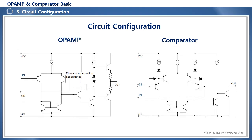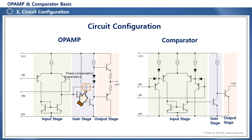Looking at the actual internal circuit of the op-amp and comparator, the input stage consists of a differential amplifier stage which amplifies the voltage difference between the plus and minus input terminals. The gain stage further increases the open loop gain. We can see that the op-amp has a phase compensation capacitor configured between the gain stage input and output to prevent oscillation, while the comparator does not. The op-amp output stage uses a push-pull type, and the comparator uses an open collector.